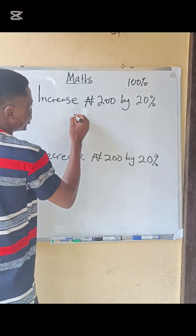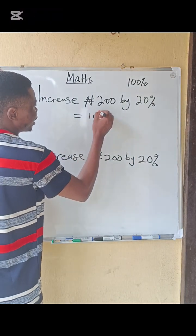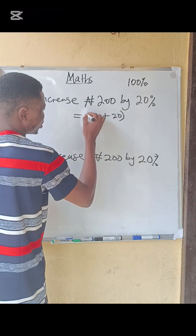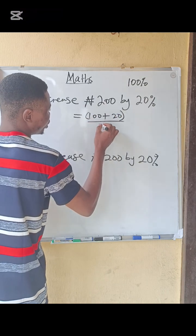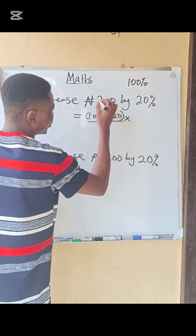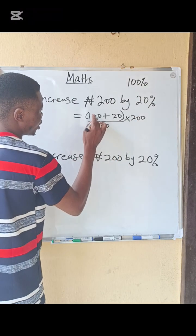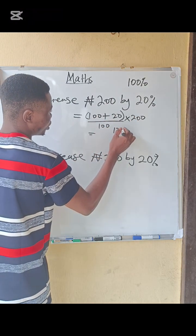Like this one is going to be 100 plus 20, all over 100, multiplied by 200. What would be the answer? Add this one to this one, that is 120, divided by 100, multiplied by 200.